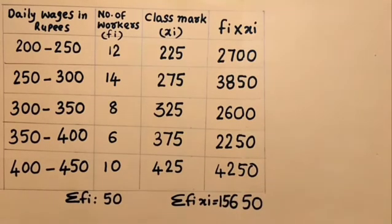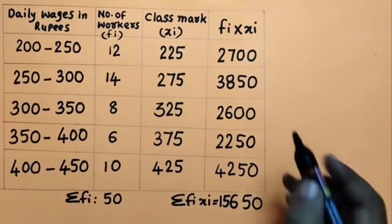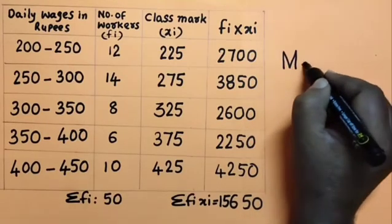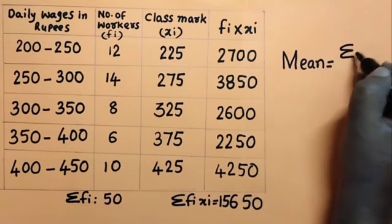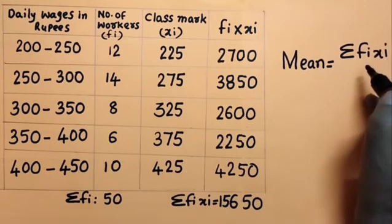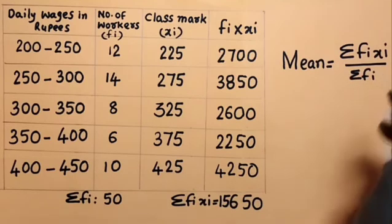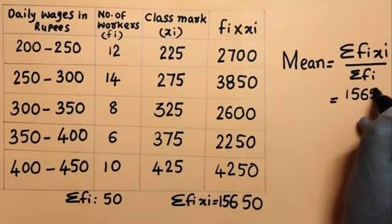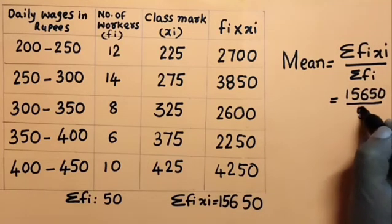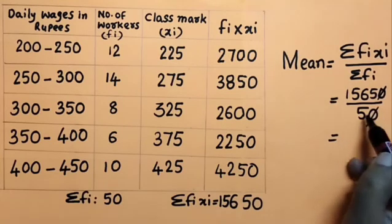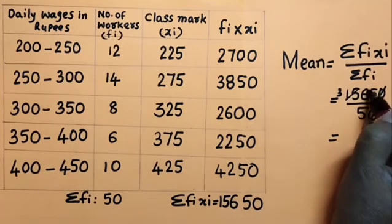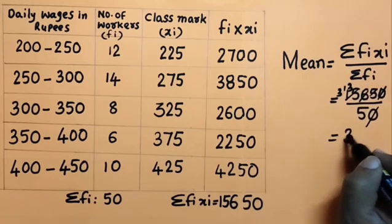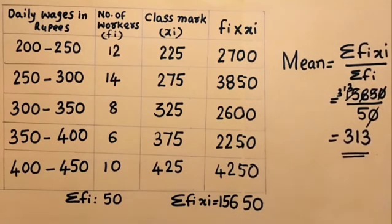So 15,650 — is it clear? Now, in the direct mean method, the formula is: mean equals summation of fi×xi divided by summation of fi. Substituting, we get 15,650 divided by 50, which gives 313. So 313 is the mean daily wage of this data.